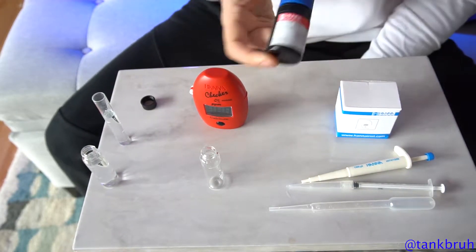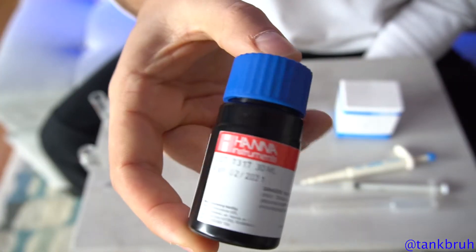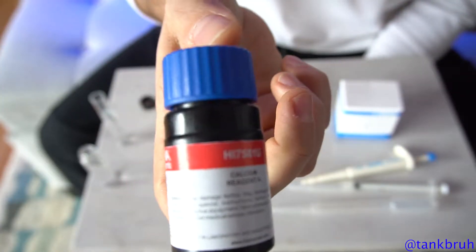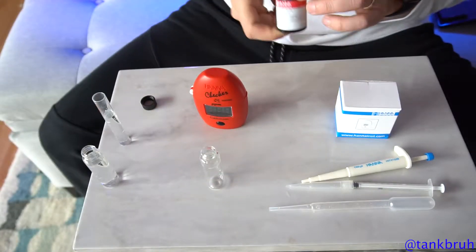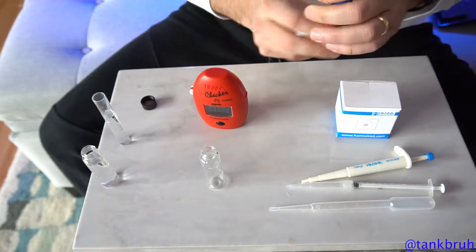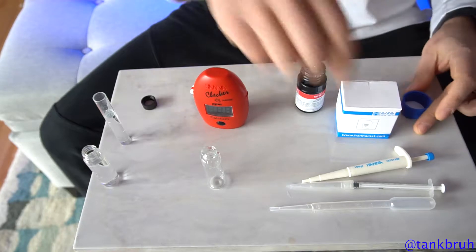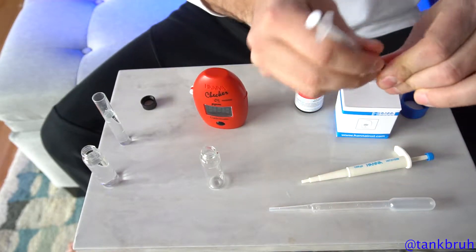All right, so step one is to take one milliliter of your reagent, which is in this bottle here, and put that into your test tube. Now to do so, you're gonna use the syringe, which is this guy.